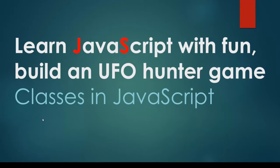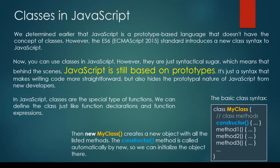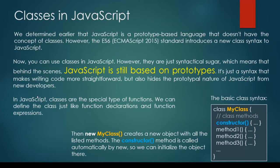In this lecture, we are going to talk about classes in JavaScript. In the previous lectures, we determined that JavaScript is a prototype-based language that doesn't have the concept of classes. However, after 2015, a new class syntax was introduced to JavaScript. You can use classes in JavaScript, but they are just syntactical sugar, which means that behind the scenes, JavaScript is still based on prototypes. It's just a syntax that makes writing code more straightforward, but also hides the prototypal nature of JavaScript from new developers.